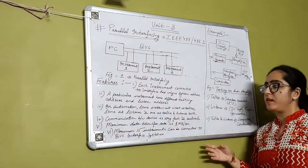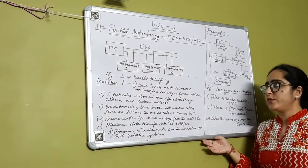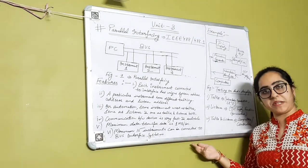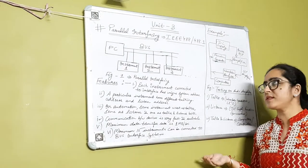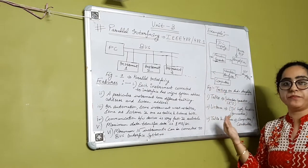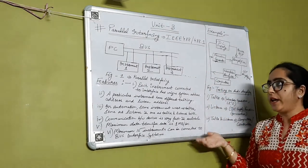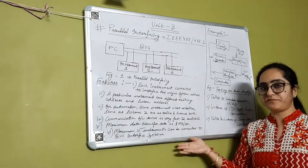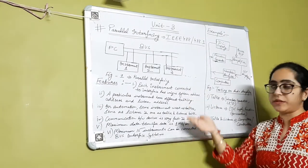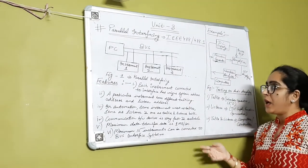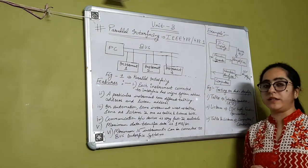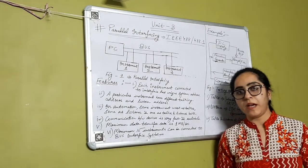Good morning students. Today we'll start with a fresh unit, as we have already completed the last unit with all the topics. Now I will start with Unit 3, where I have to start with the parallel or series interfacing. First, we'll start with the parallel interfacing. In parallel interfacing, we need to see GPIB — the IEEE 488 bus.